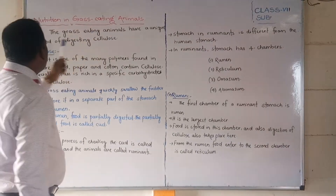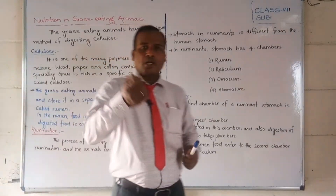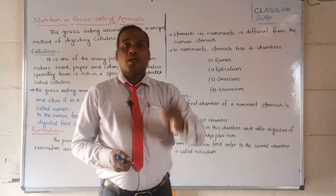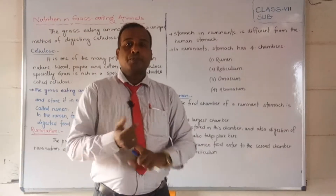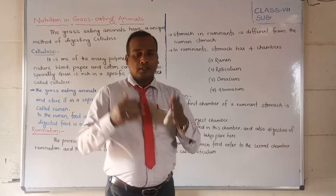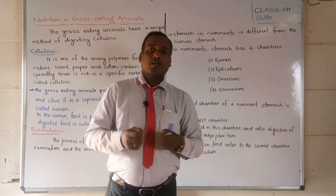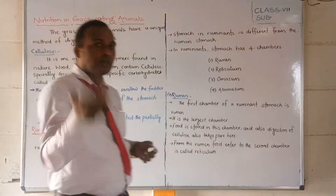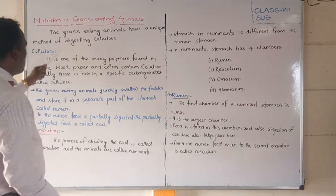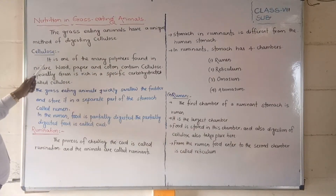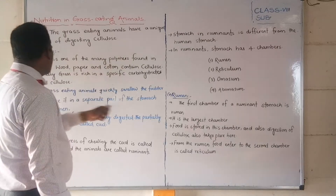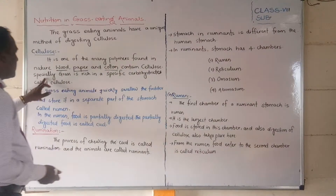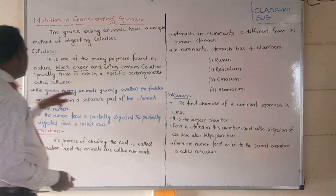Grass-eating animals have a unique method of digesting cellulose. Cellulose is one of the many polymers found in nature. Wood, paper, and cotton all contain cellulose. Grass is rich in a specific carbohydrate called cellulose. This cellulose is eaten by grass-eating animals like cows, buffaloes, and deer.